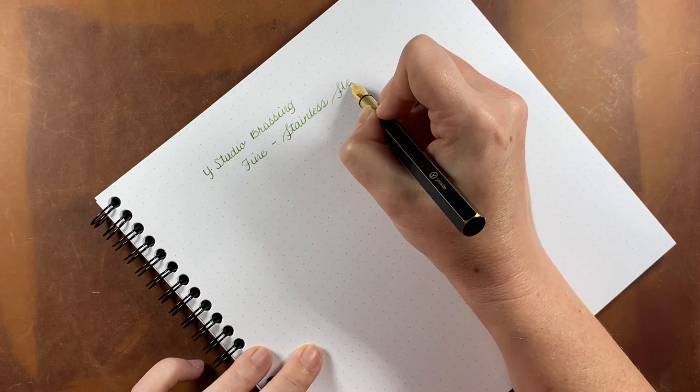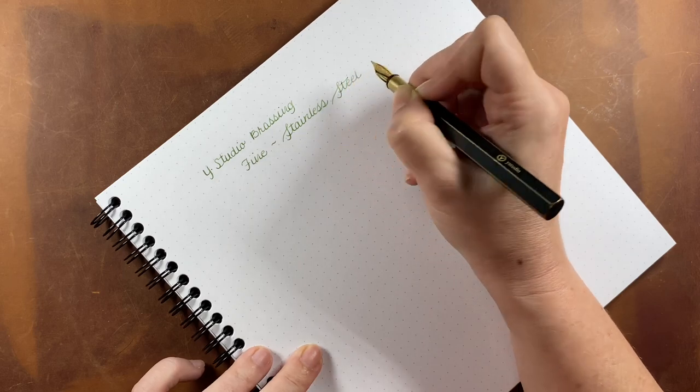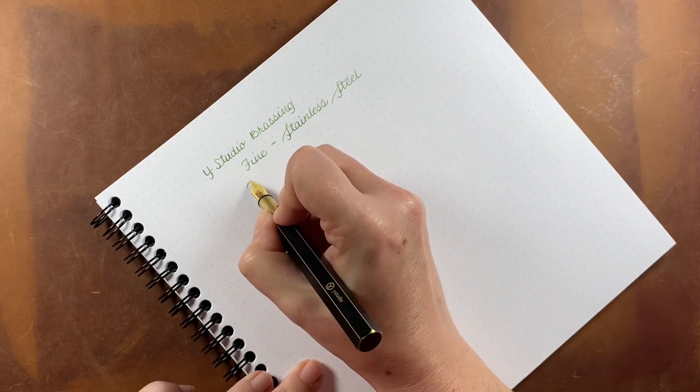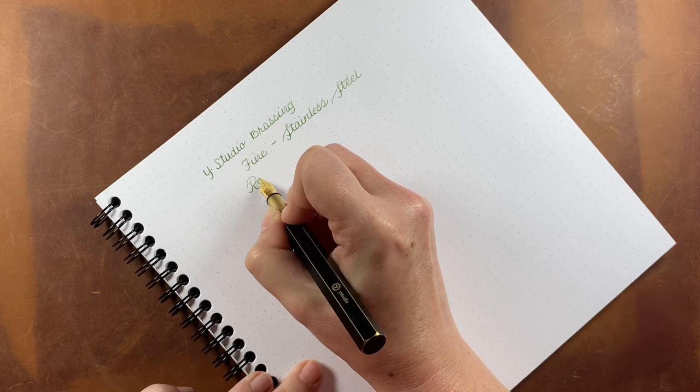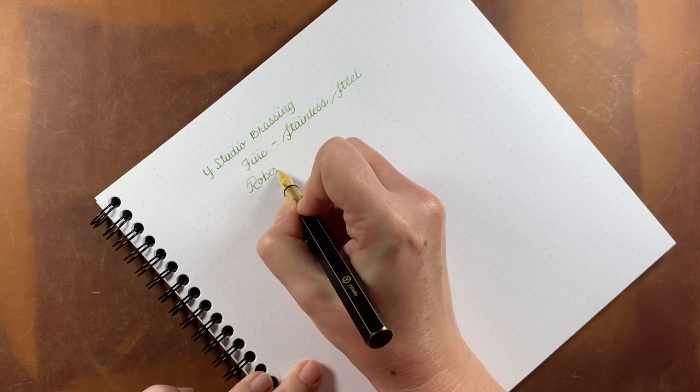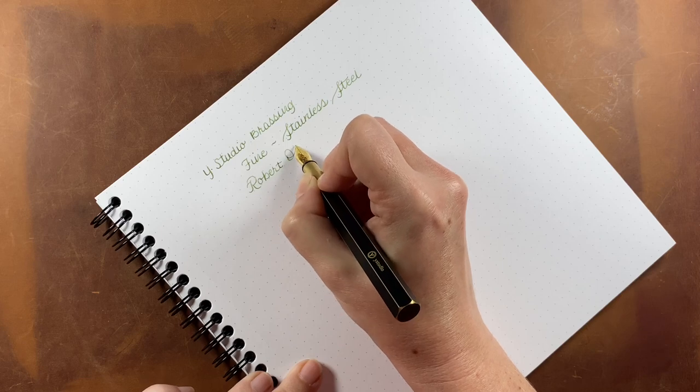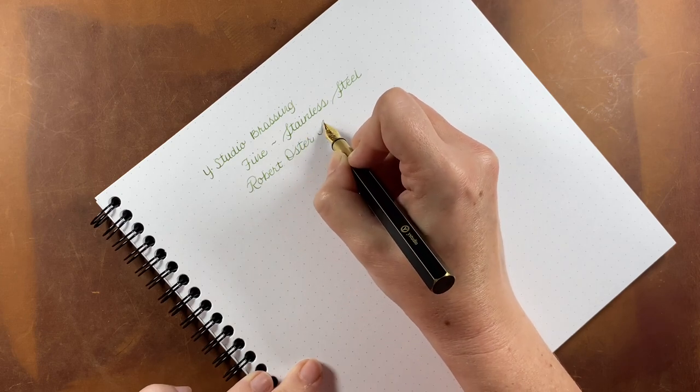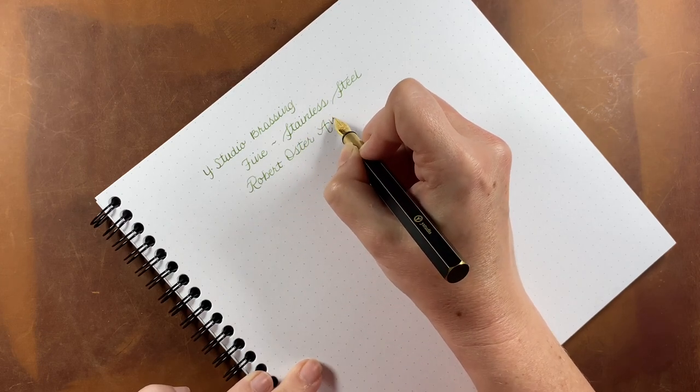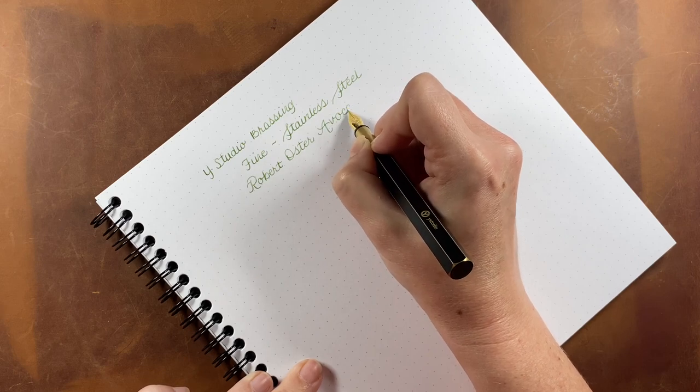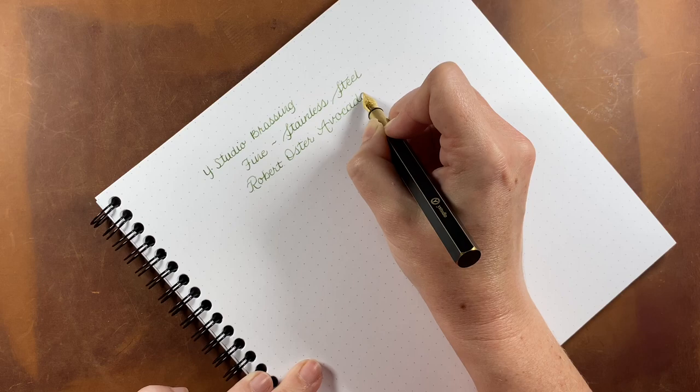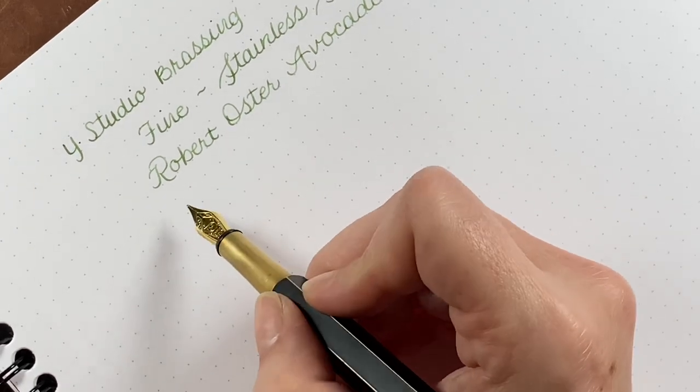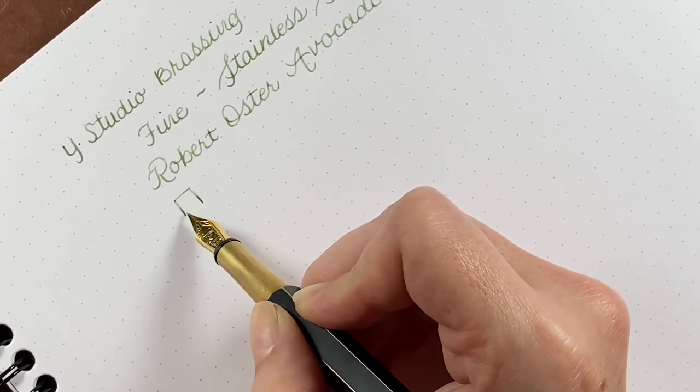Whatever it is, it is a beautiful nib. It is one of my favorite fountain pens. Okay, and this is the Robert Oster avocado. And we'll see how it lays down the color from the nib.